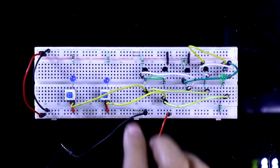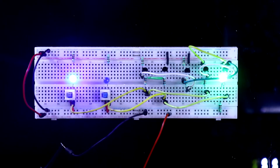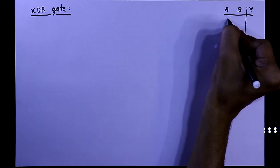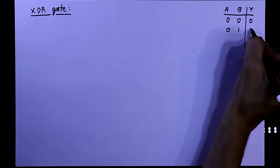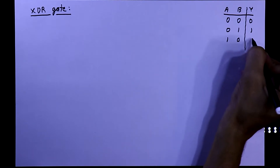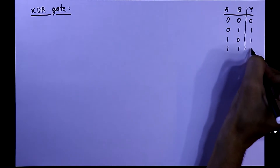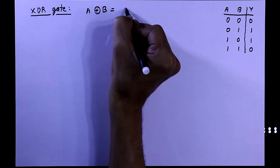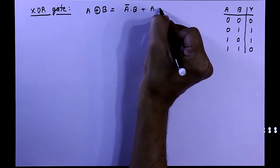XOR gate truth table: when both inputs are 0 the output is 0; when inputs are 0 and 1 the output is 1; when inputs are 1 and 0 the output is 1; and when both inputs are 1 the output is 0. A XOR B equals A-bar·B plus A·B-bar — this is the mathematical expression for the XOR gate.